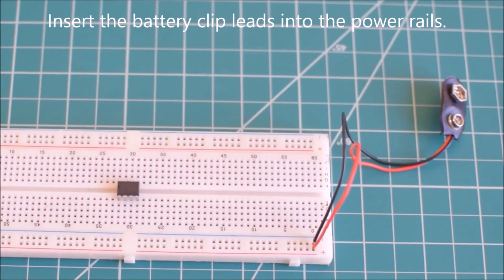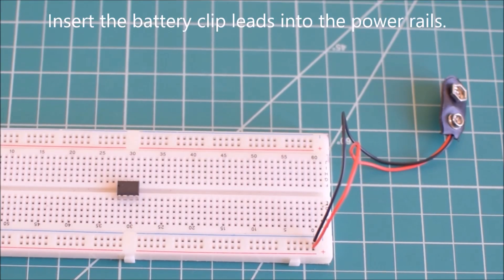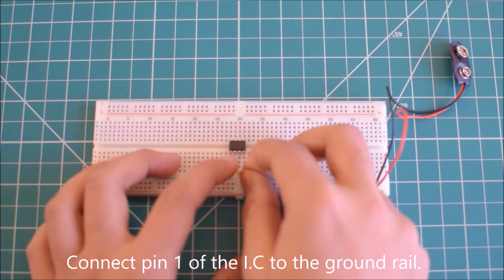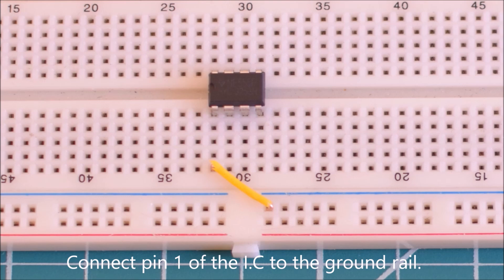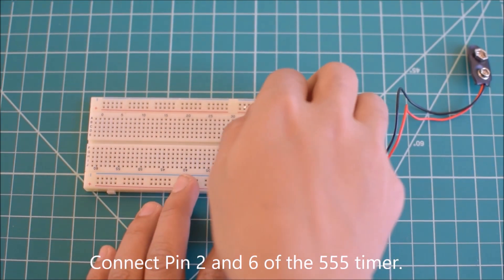Insert the battery clip leads into the power rail. Connect pin 1 to the ground rail. Connect pin 2 and 6.